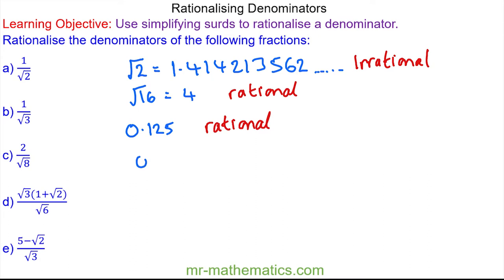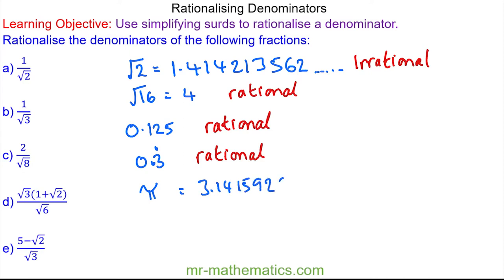And if we looked at 0.3 recurring, the 3 would go on forever but it is rational because it can be written as a fraction. Not all irrational numbers are square or cube roots — if we looked at the number pi, as a decimal this is 3.141592654, and this number never terminates and never repeats, so it is an irrational number. Irrational numbers are those which never terminate and never repeat, and cannot be written as a fraction in exact form.